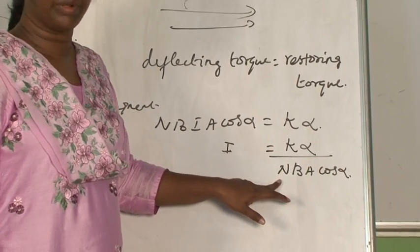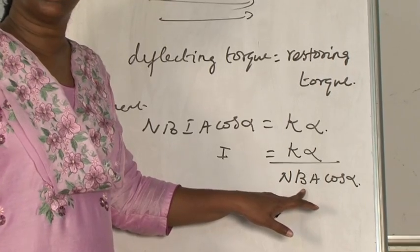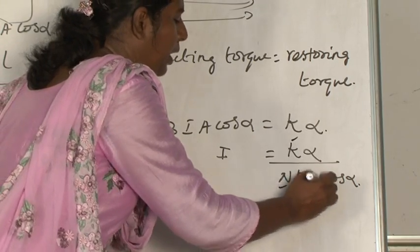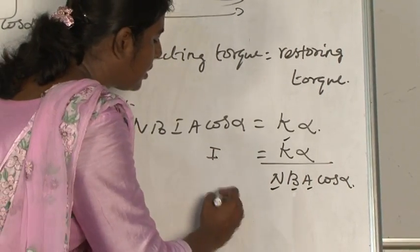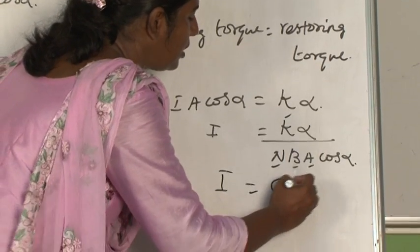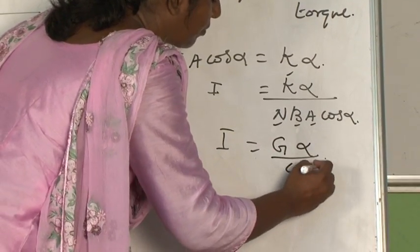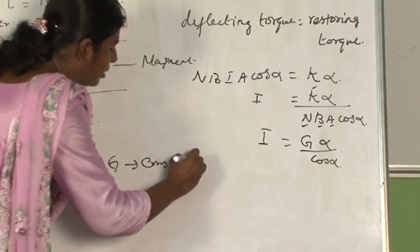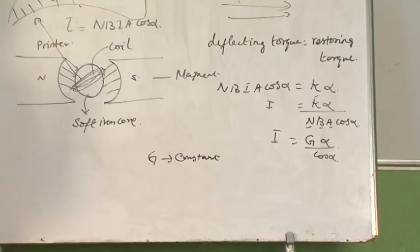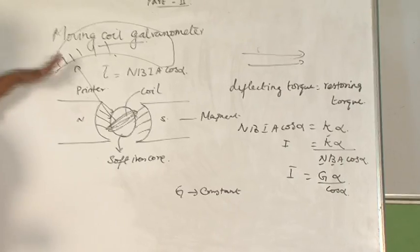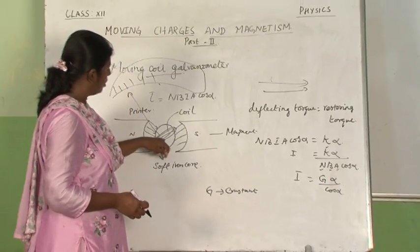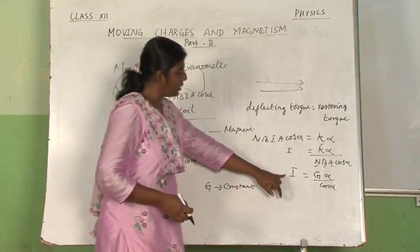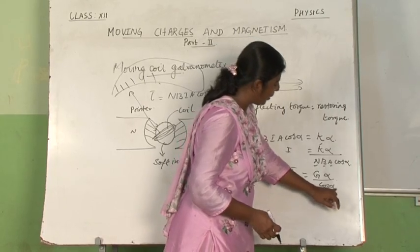N is the constant number of turns, B is a uniform magnetic field that will not be changing, and A is the area of the coil. Since K, N, B, and A are all constants, you can write I as G into alpha divided by cos alpha, where G is your galvanometer constant. This moving coil galvanometer helps you find the deflection produced due to the amount of current passing through your coil.